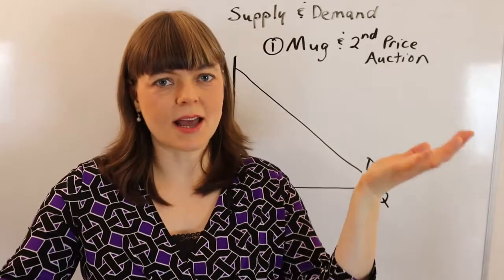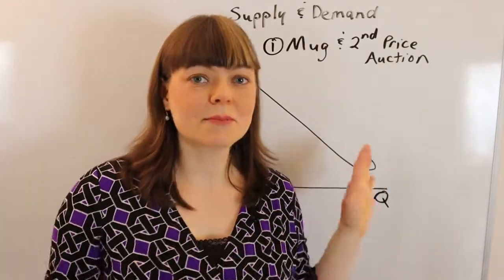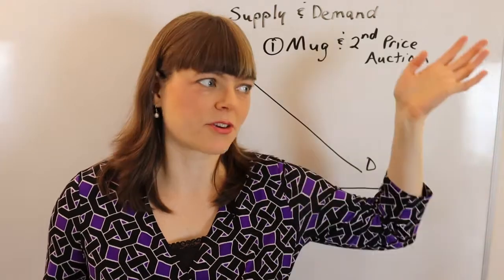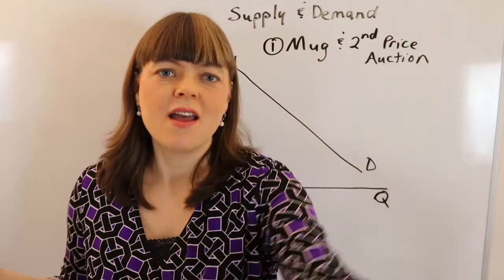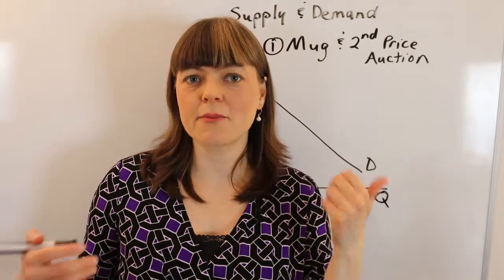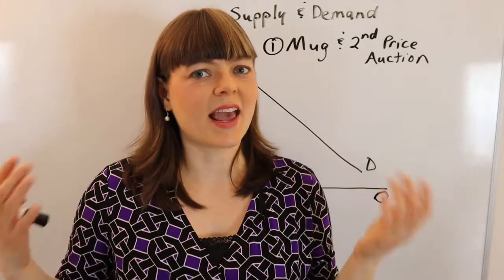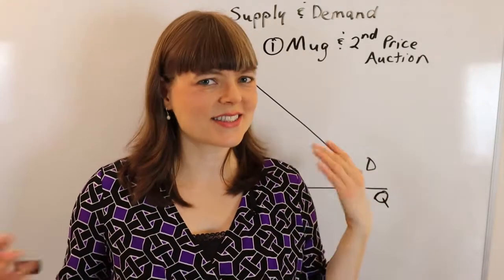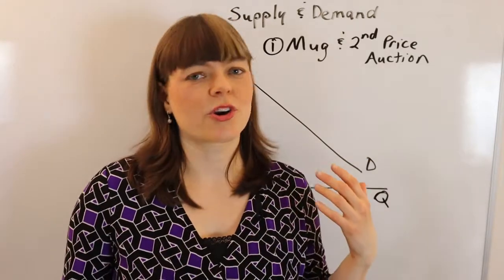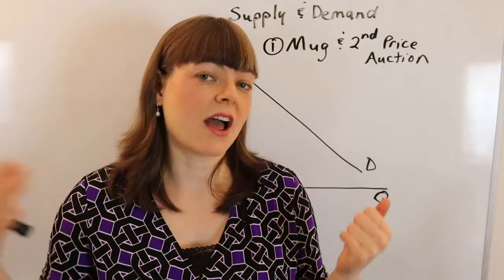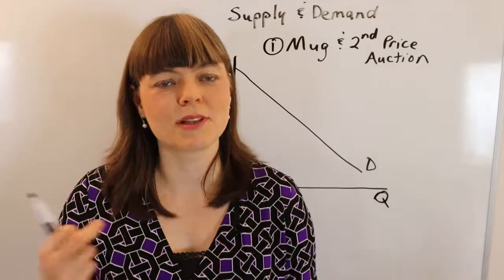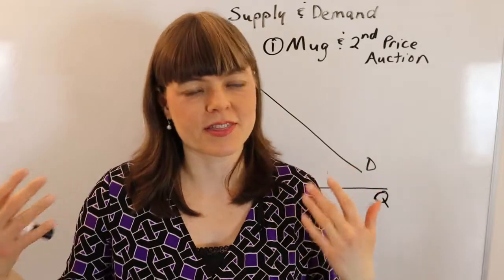You get them to stand up and explain that you want them to line themselves up around the classroom according to how much they value the product — the person who values it most on one end, the person who values it least on the other. You tell them you're going to time them to see how fast the class can do this. A little competition helps, like comparing to last year's class time, to get the blood flowing and learn faster.